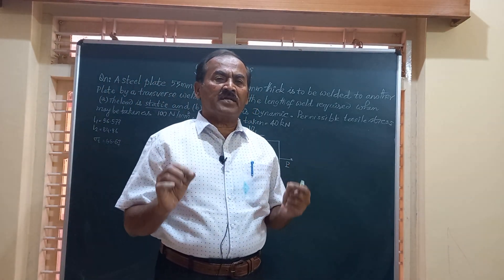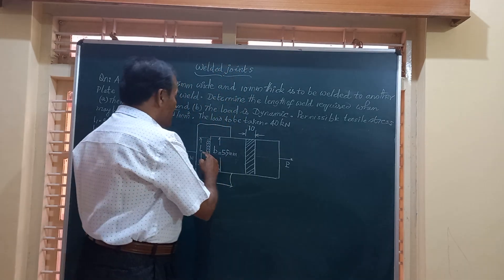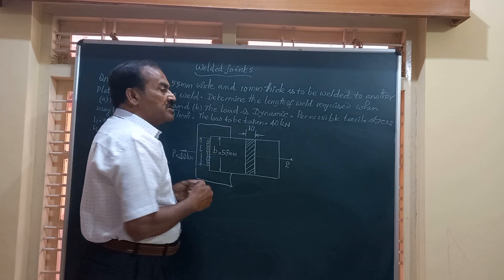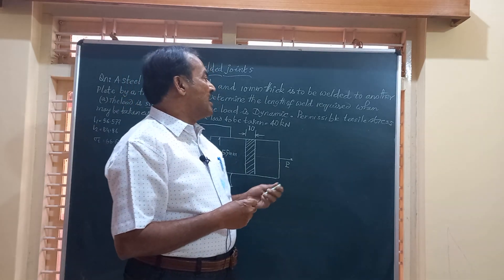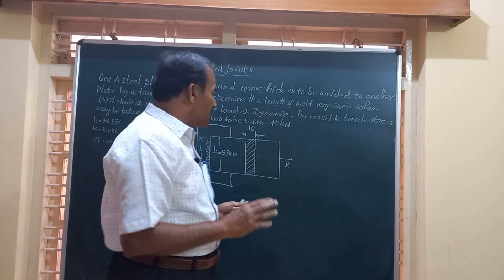Friends, when you say transverse weld, it is a weld which is done normal to the load axis. This load is acting perpendicular to the weld. And here he has asked us to find out, to determine, what should be the length of weld to sustain a load of 40 kilonewton.